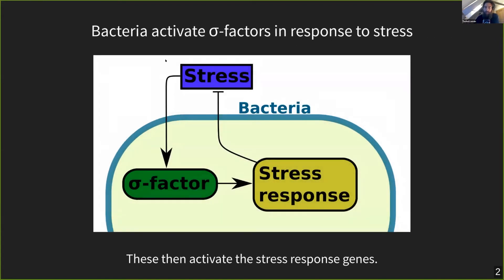Starting with stress response: the reason we want to know more about this is that there are many different settings where we want to kill bacteria, and we do that by the application of stress. So if we know how the bacteria responds to stress, we know how to kill them more efficiently. The stress response almost always starts with the activation of a sigma factor, which then acts as a master regulator of the stress response, activating all of the functions to deal with the stress. Essentially, we want to investigate sigma factor activity in response to stress.